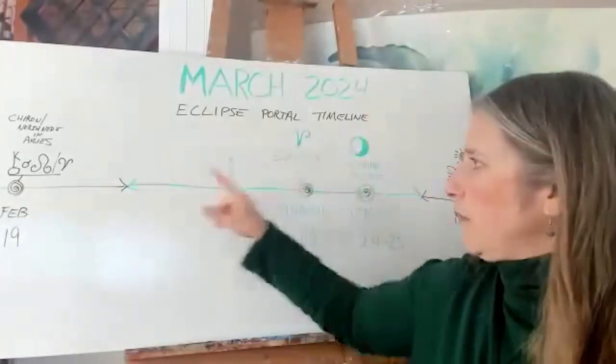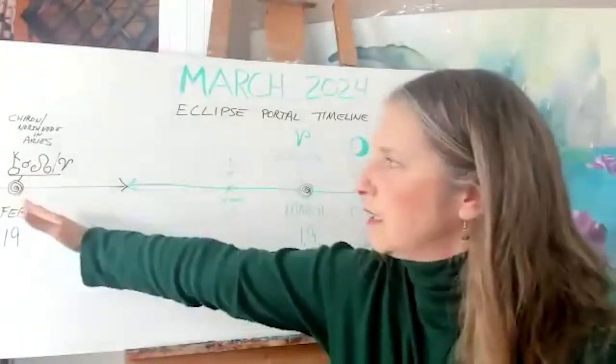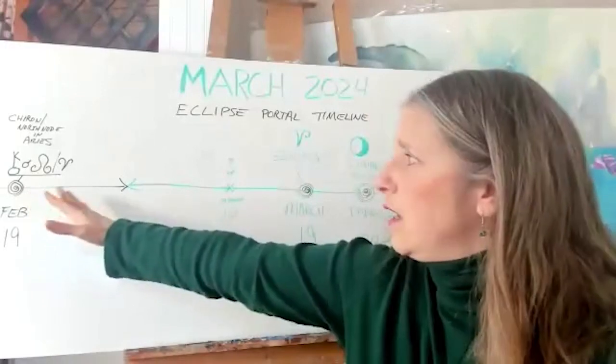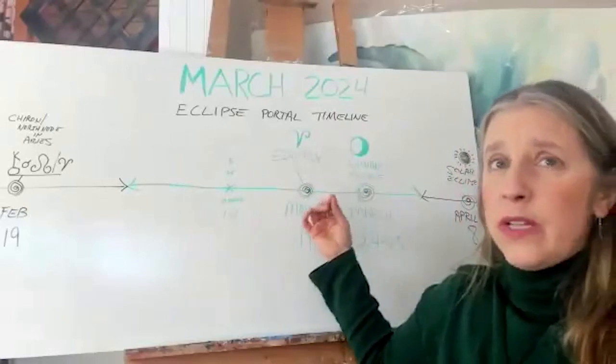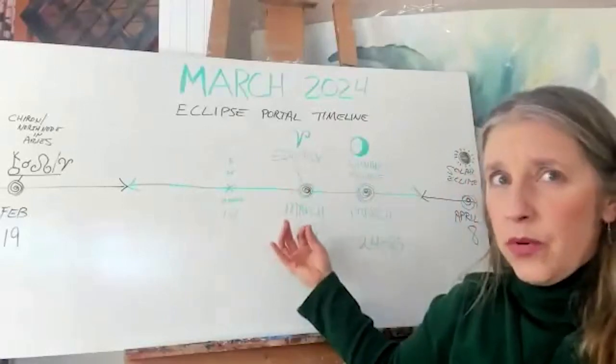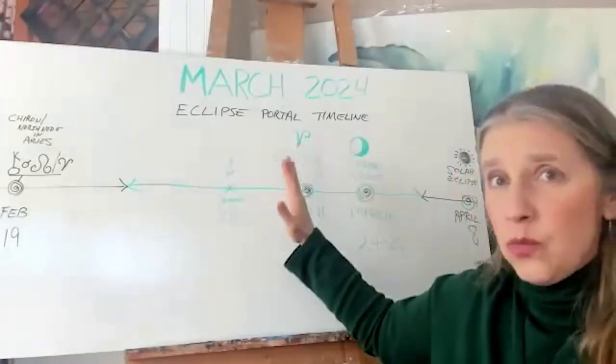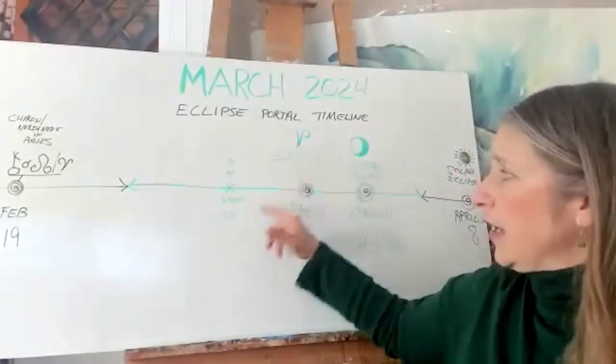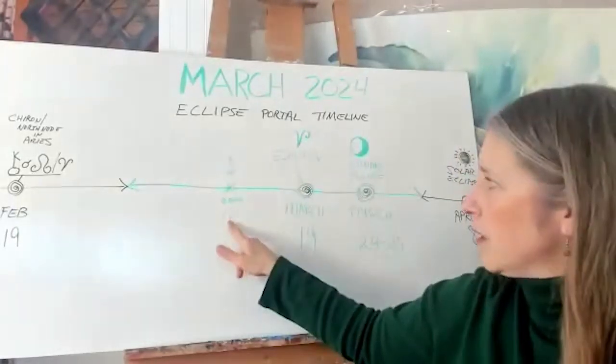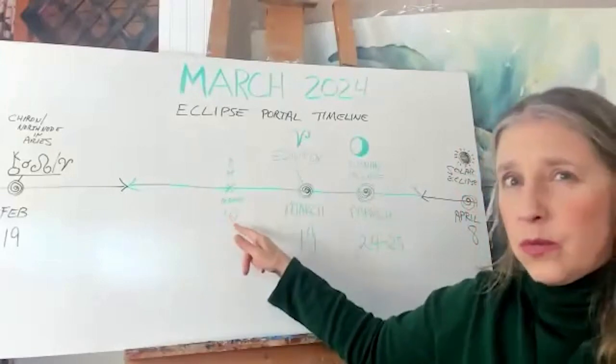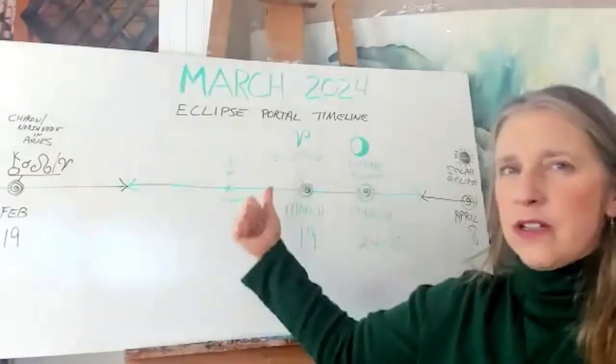It's also exactly one month later after that event that the March equinox forms. What I'm seeing is that this kicks off the energies and they start to build and kind of simmer. Then here in the equinox we hit kind of a tipping point. Equinoxes are always a turning point of sorts and this is when we actually move from Pisces into Aries right here. I've noted the new moon right here so we've got this March 10th.